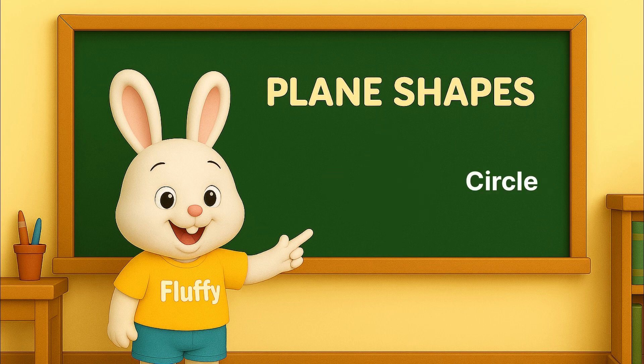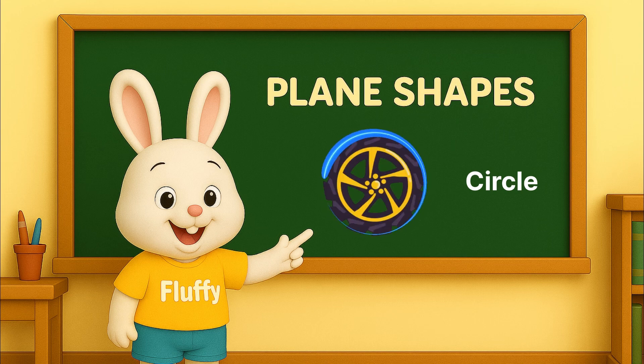Circle. A circle is round. It has no corners and goes round and round like a wheel.